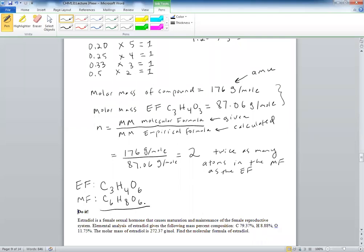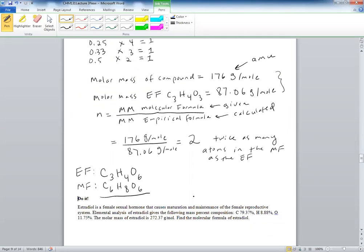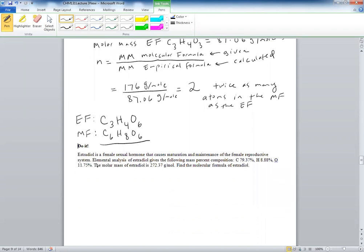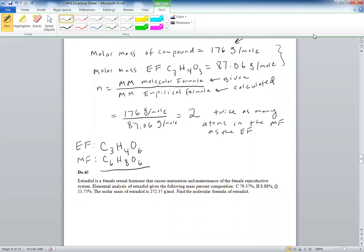So my molecular formula would be two times each one of these. And that would be C6H8O6. So that's the molecular formula of ascorbic acid. You have this problem here, please work on it, and we can do that in class.